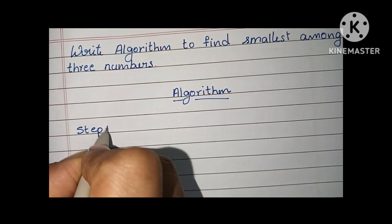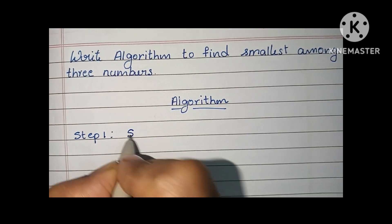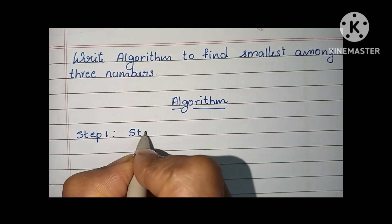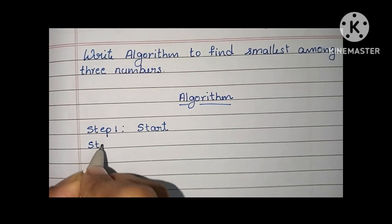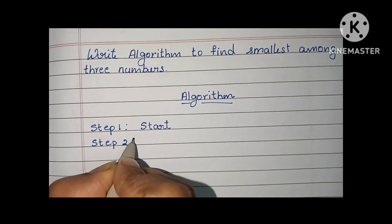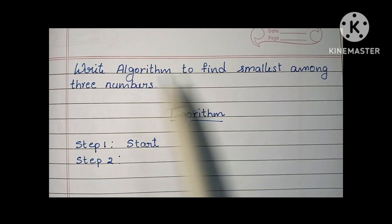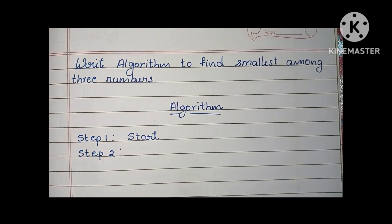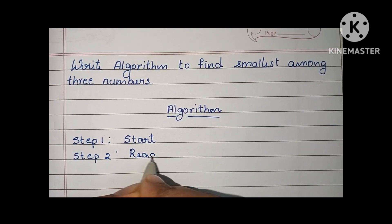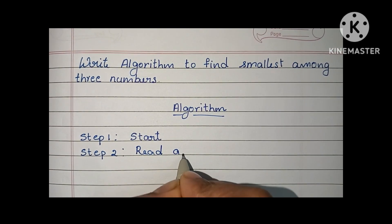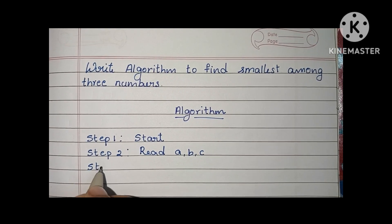In an algorithm, step one is always to start with a start statement. In step two, we have to read the input variables. Here we have to find the smallest among three numbers, so we have to read three numbers: a, b, and c.